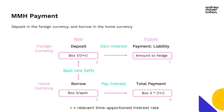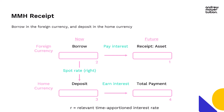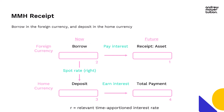For a receipt, it's pretty much the same thing. The only difference — it's a bit of a game of spot the difference — is we're now borrowing in the foreign currency on the top and depositing in the home currency on the bottom. Everything else is the same. The calculations are the same: box one is the amount to hedge, box two is box one divided by one plus the rate, box three is box two divided by the spot, and box four is box three times one plus the rate. It's just you're borrowing on top and depositing on the bottom to protect against this receipt.